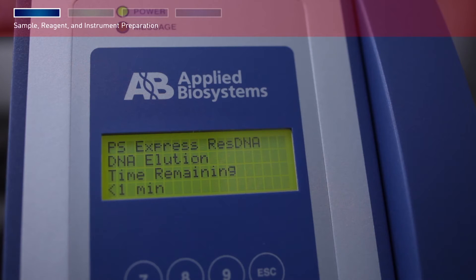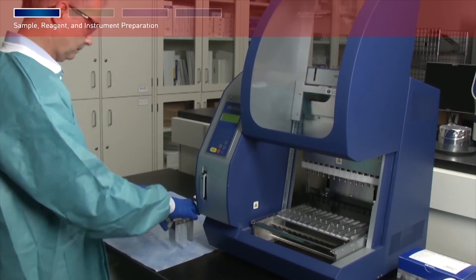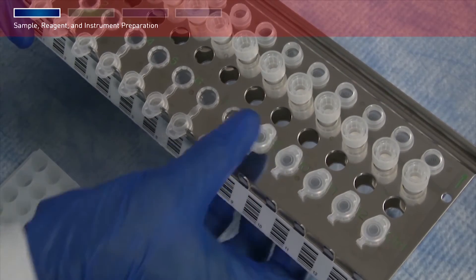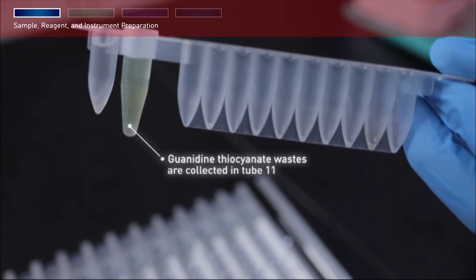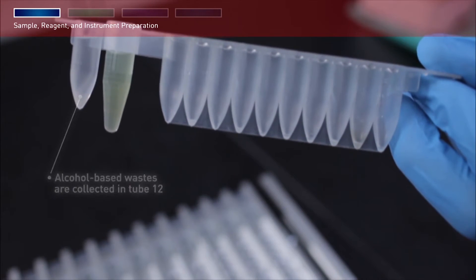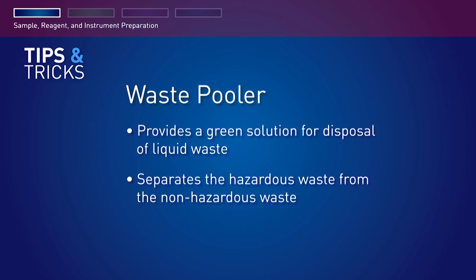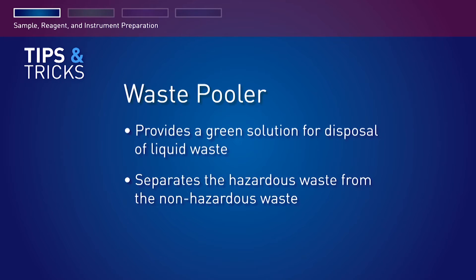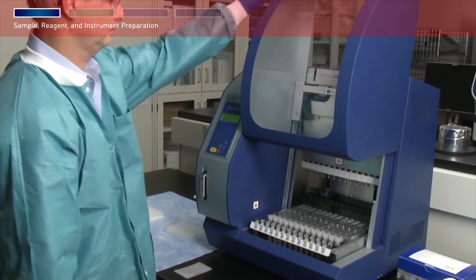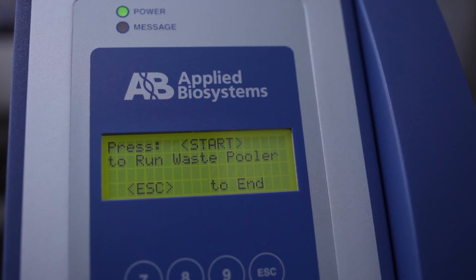At the end of the run, the instrument beeps briefly and the digital display shows additional options. Open the instrument door, remove and cap the elution tubes containing the purified nucleic acid. If you ran the waste pooler protocol, the guanidine thiocyanate wastes are collected in tube 11 and the alcohol-based wastes are collected in tube 12, leaving the rest of the cartridge empty and easy to dispose. The waste pooler provides a green solution for disposal of liquid waste generated from an Automate Express run. The waste pooler separates the hazardous waste from the non-hazardous waste and consolidates it, thereby enabling a safer and easier way to dispose the spent reagents.